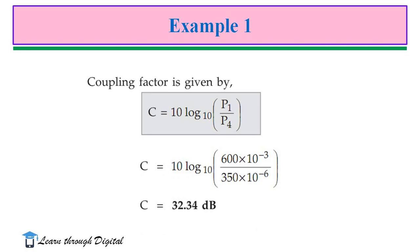Now, we substitute the values of P1 and P4. We will get C is equal to 32.34dB.